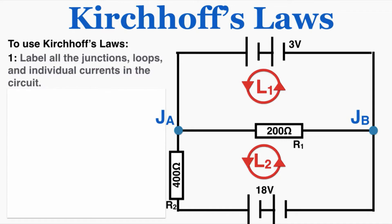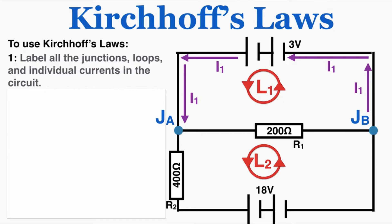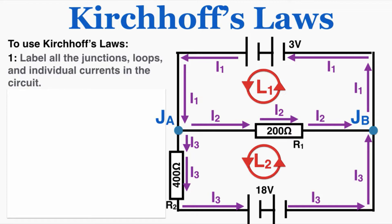Now I'll label the individual currents. Some current I1 comes out of this battery and goes into the other battery. Current only changes when it's split at a junction. I made up the direction for I1 because I don't know which way it goes — the 18-volt battery might push current the opposite way through the 3-volt battery. After I1 hits a junction, I label the next segment I2. Then we have I3 down here, which doesn't change until it reaches a junction.